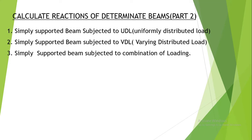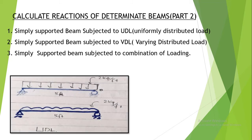In the second part of the video series on how to determine end reactions in determinate beams, we are going to discuss three cases: first, a simply supported beam subject to UDL (uniformly distributed load); then the same beam subject to VDL (varying distributed load); and finally, point load plus UDL plus VDL acting simultaneously. So let's first discuss UDL.